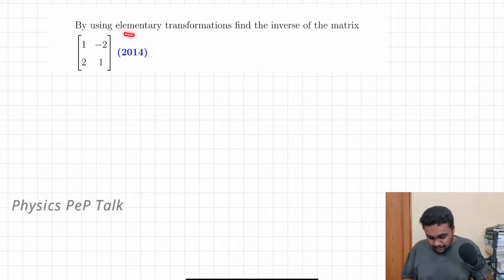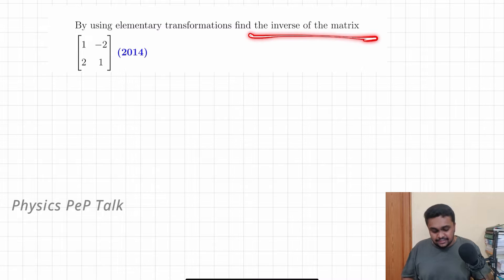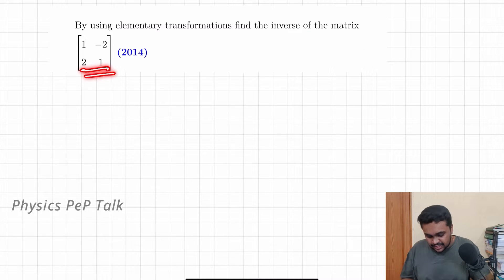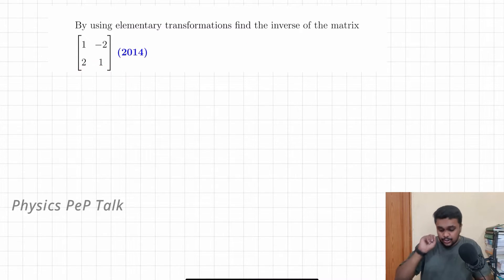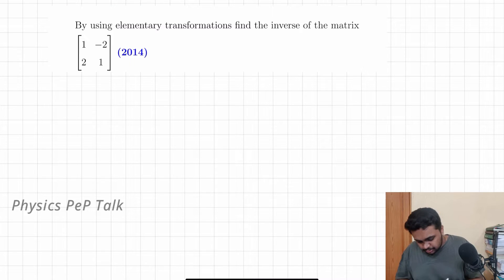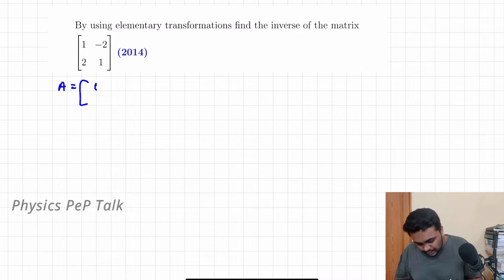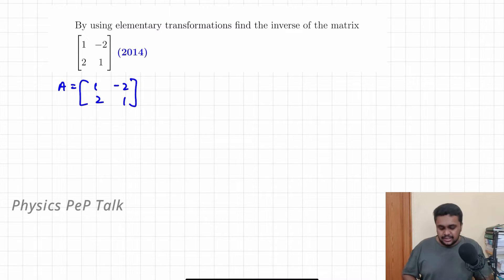By elementary transformation, find the inverse of the matrix. This question was asked in 2014. I will assume the matrix as A, that is equal to [1, -2; 2, 1].